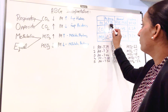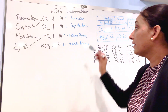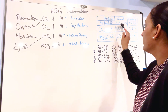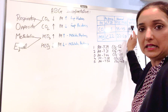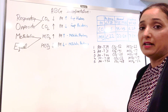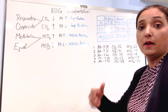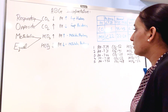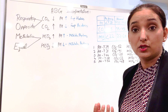If pH is less than 7.35, then it is acidosis. And if it's more than 7.45, then it is alkalosis. As you know, carbon dioxide represents our respiratory system, and carbon dioxide is acidic in nature.